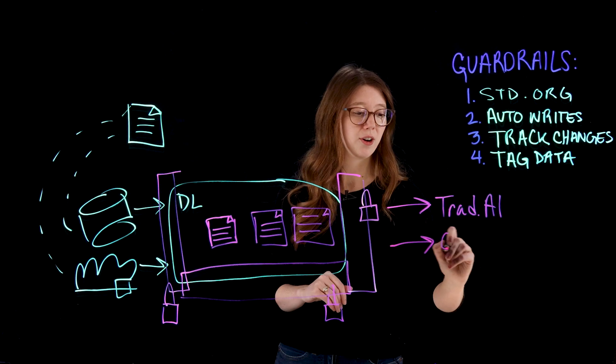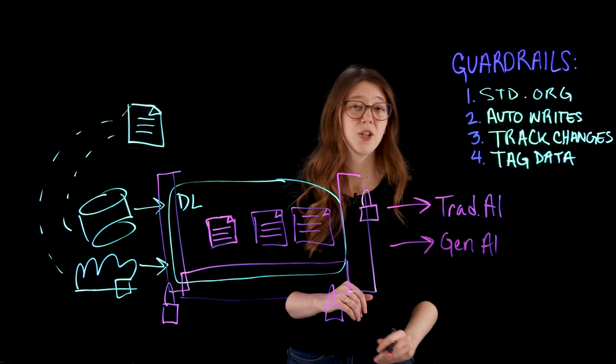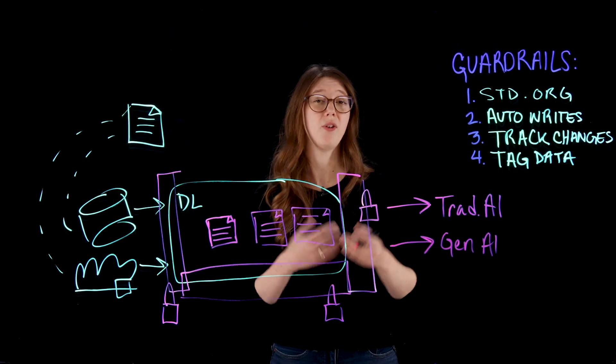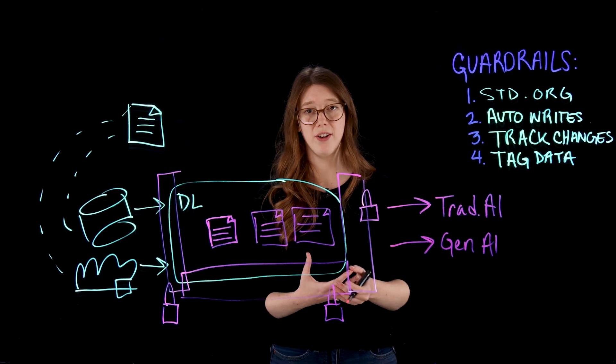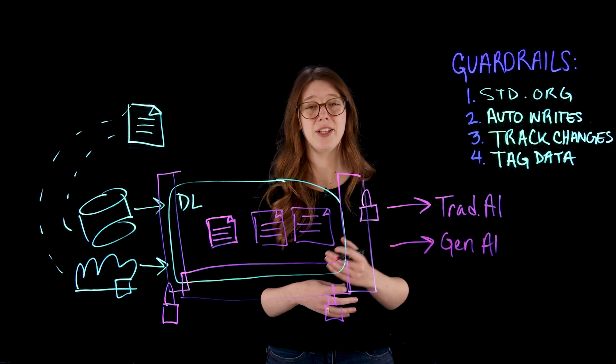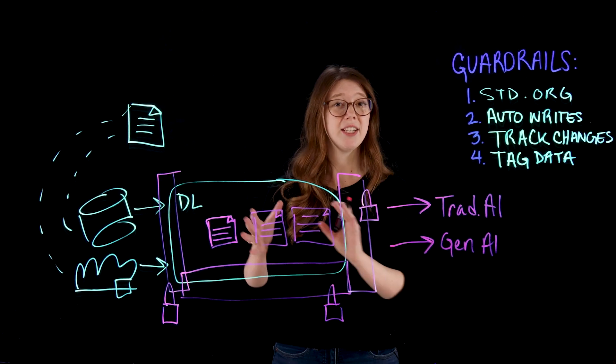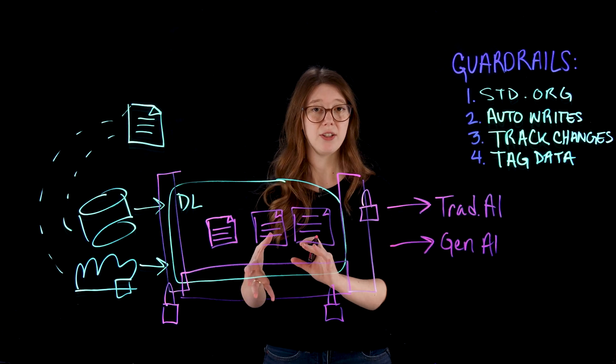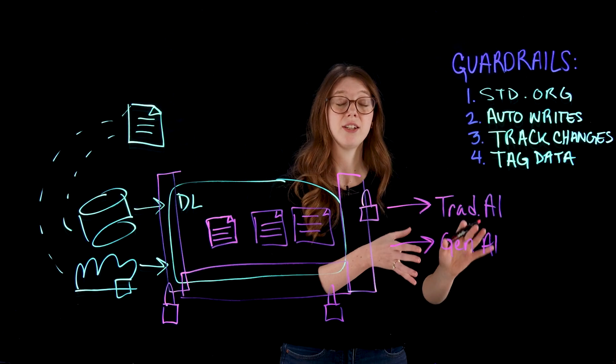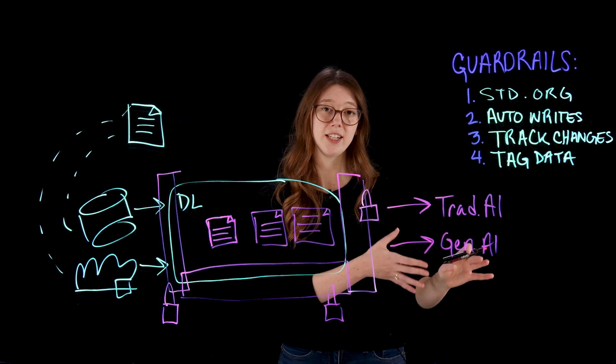And now for generative AI, you might be following something like a RAG pattern because you probably aren't training a large language model from scratch. You're probably taking some kind of data out of your repository, and you're vectorizing it so we can enrich an existing LLM model.